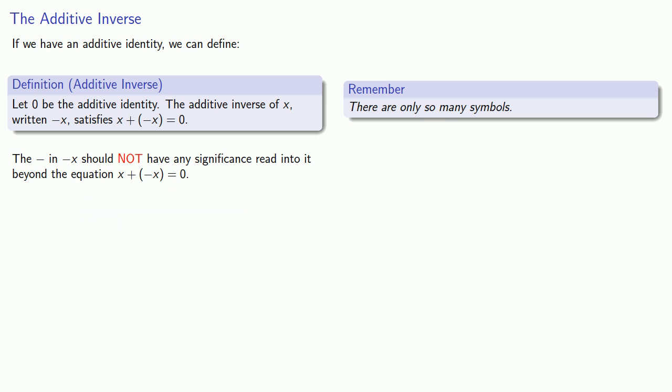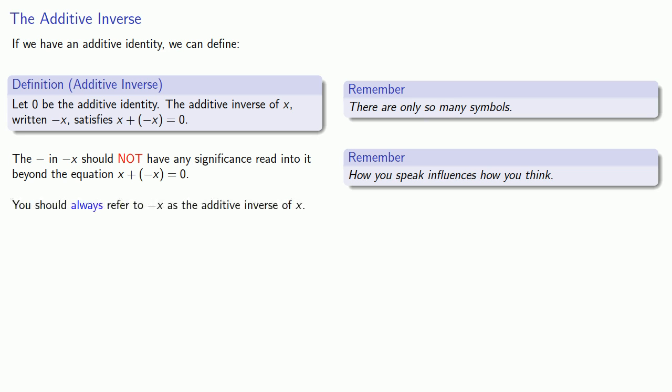The second important idea is how you speak influences how you think. You might look at this and say, oh, negative x, because that's how we're used to talking about it. But really, you should always refer to this as the additive inverse of x. Because you want to think about this as the additive inverse of x, namely, that if you add it to x, you get the additive identity.